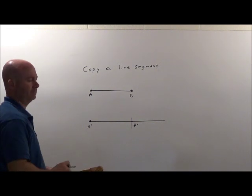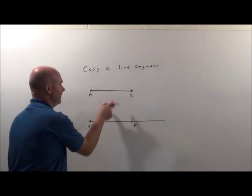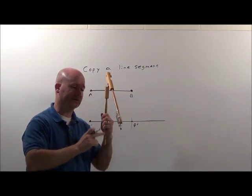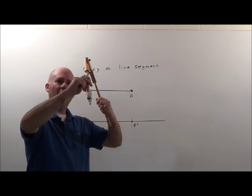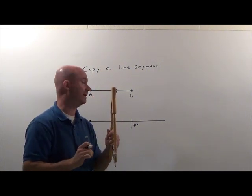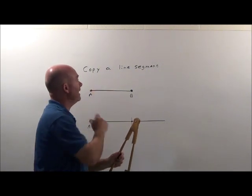It's that simple. So A prime, B prime, there—exact same length, has to be. Again, one of the things we're going to do is use the compass as a measuring tool, just opening it up or shutting it down to measure the distance between points or, in this case, the line segment's points.